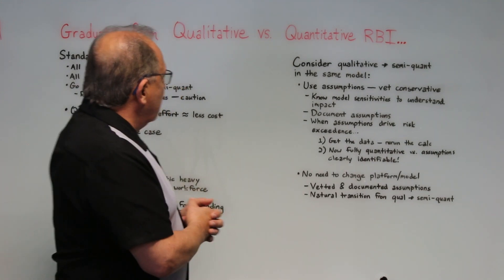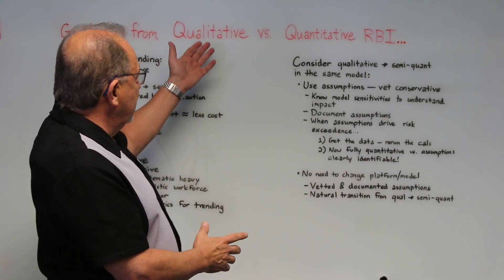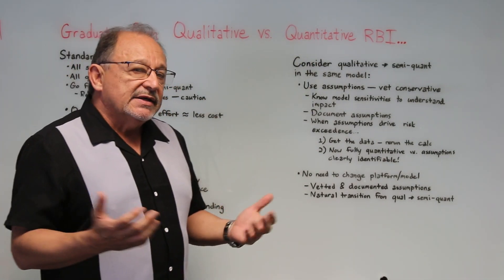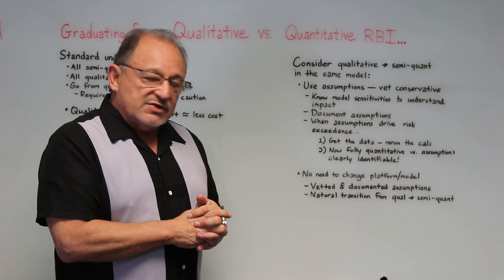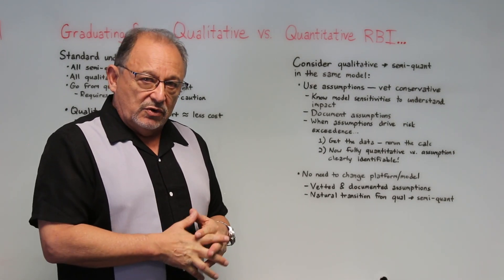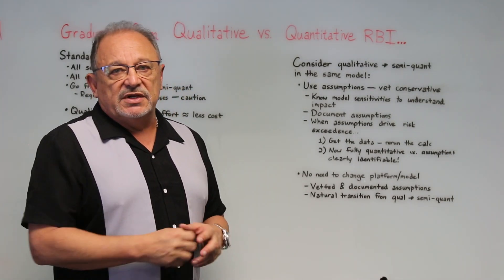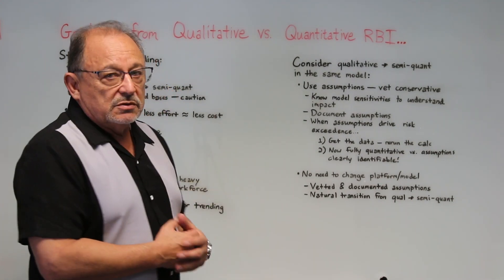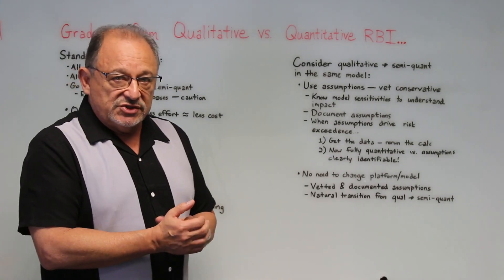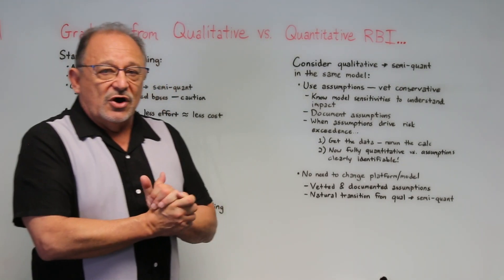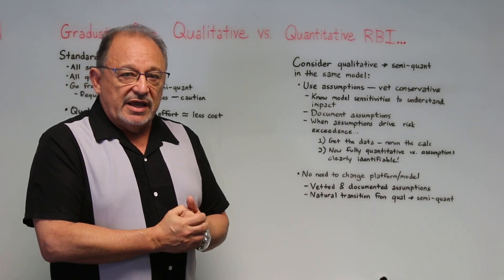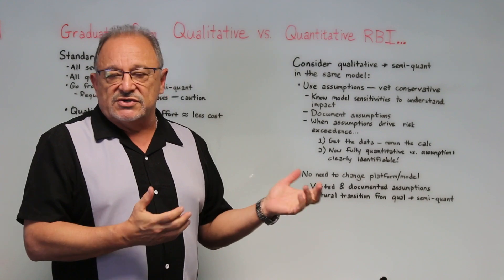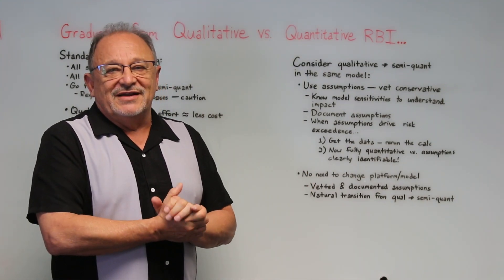Those are just a few thoughts on how we can work within the same platform and move from more qualitative to more quantitative RBI to help manage our equipment more effectively — so we can really optimize our programs. We're not overspending, not underspending, not hurting anyone, not damaging the environment. We're doing a good, reliable, responsible job of managing our assets. Thanks for sitting in on this whiteboard discussion — please send us your comments and suggestions, whether you agree or disagree. We'd love to hear from you. Thanks and have a great day.